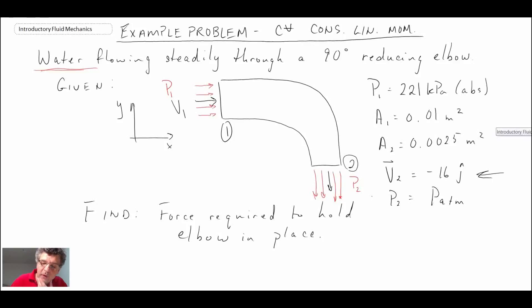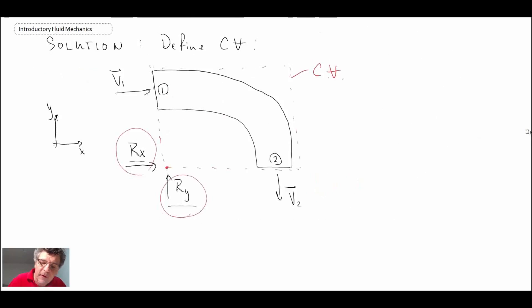For the Y component, we were told P2 is atmospheric pressure, and on the other side of the elbow, this is atmospheric as well. So if we look at our free body diagram, we have P atmosphere all around - P atmosphere here, with the exception of control surface 1 where we had a higher pressure, that was P1. And then down here, it's P atmosphere. Consequently, there is no force in the Y direction due to pressure.